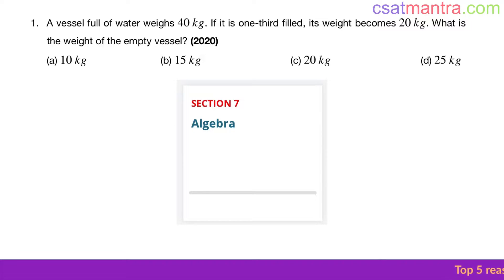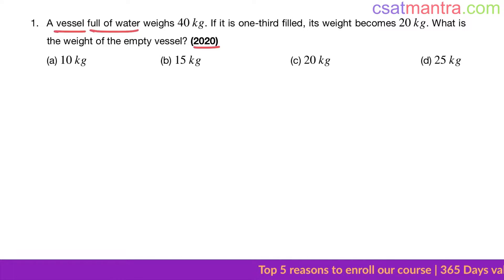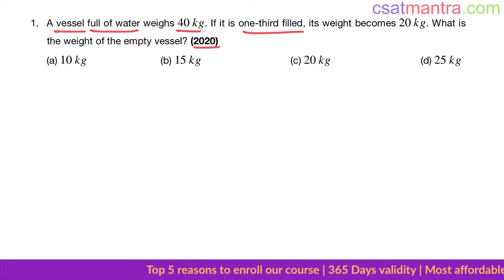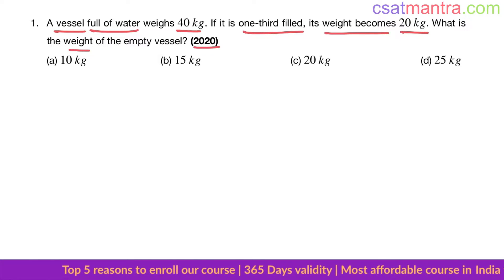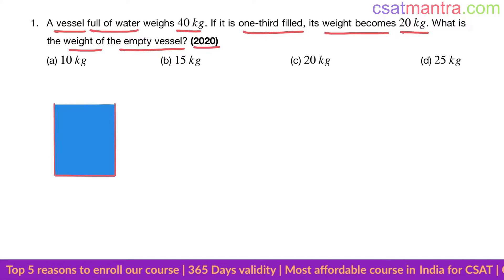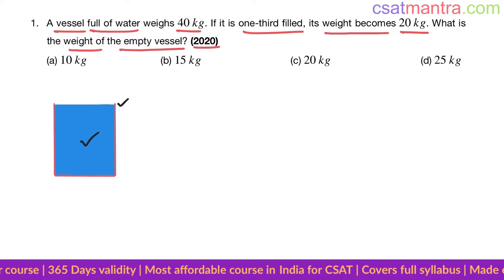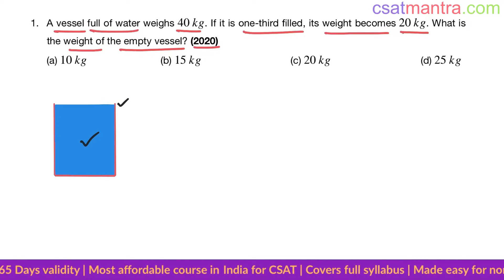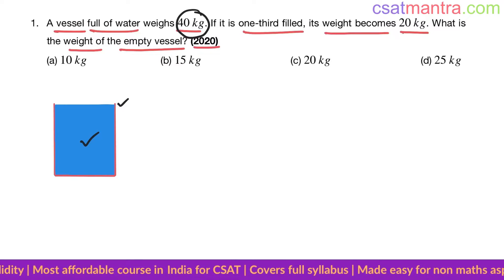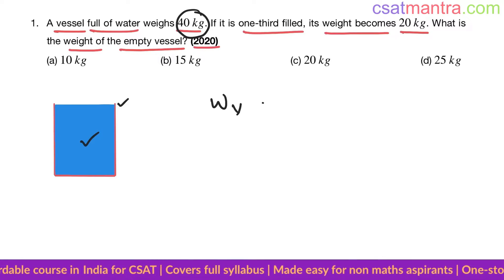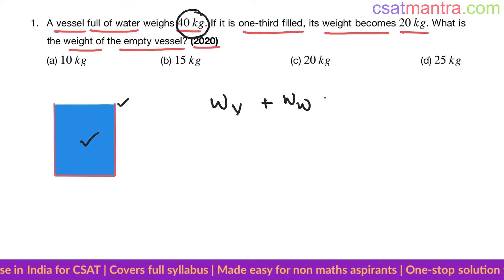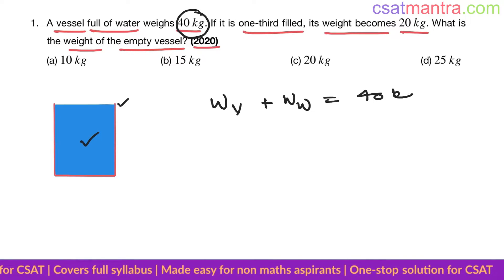Namaskaram. This question is from the algebra chapter, asked in 2020 — a very easy question. A vessel full of water weighs 40 kg. We have a vessel (shown in red) which is full of water, so the weight of the vessel plus the weight of the water equals 40 kg.